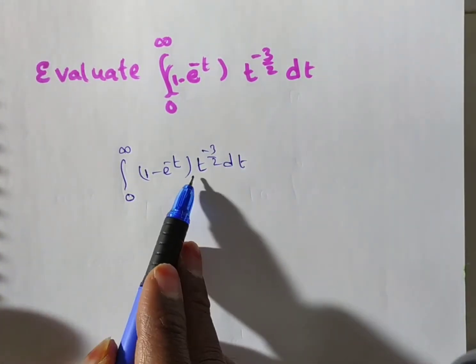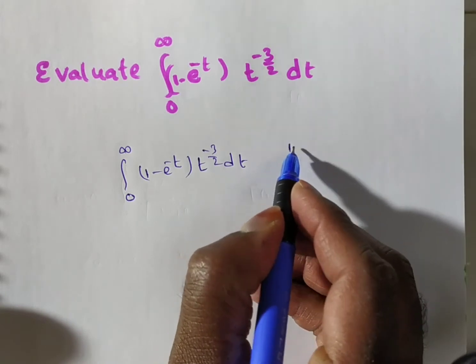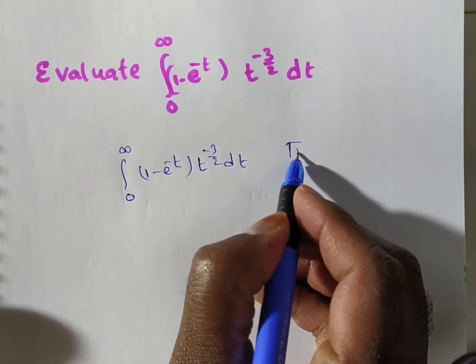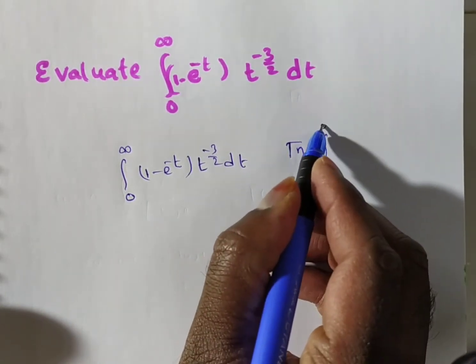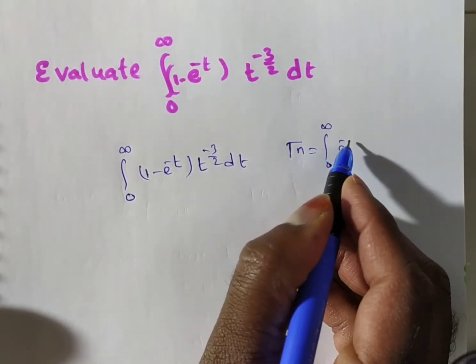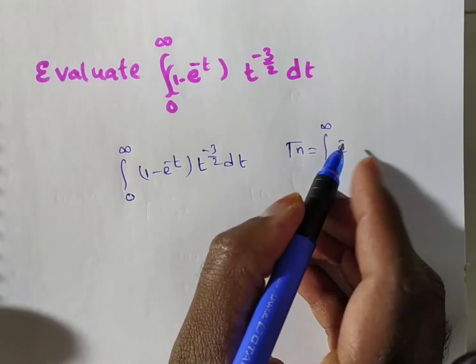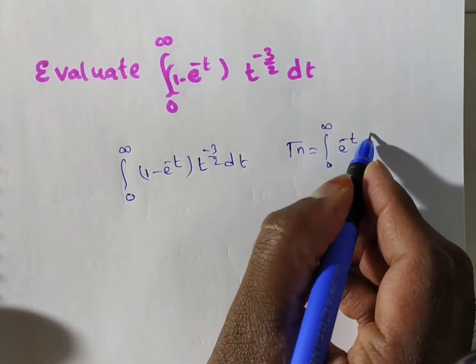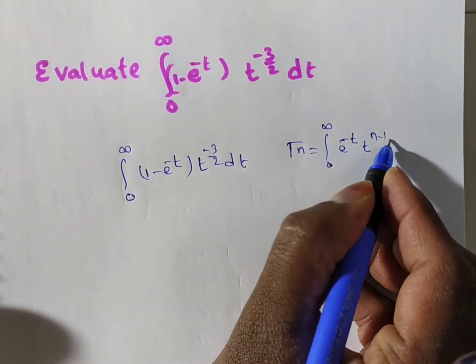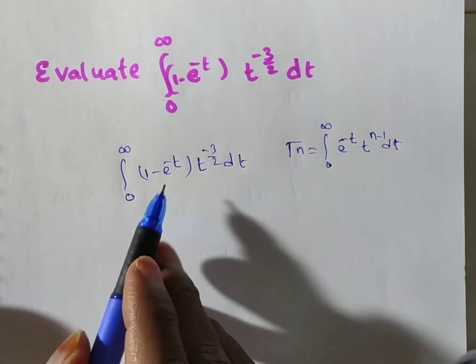This is not given directly in the gamma function form. Recall that gamma of n is the integral from 0 to infinity of e to the power minus t into t to the power n minus 1, dt.